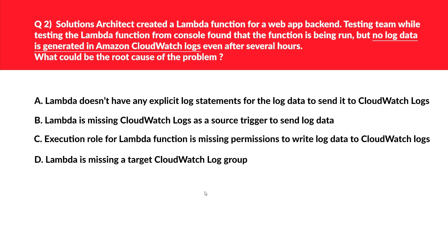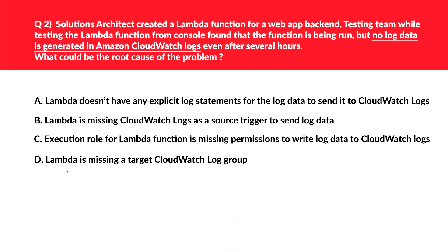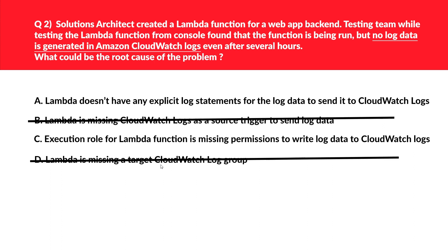We have an interesting question related to Lambda and CloudWatch Logs. Let's look at options B and D together. B says Lambda is missing CloudWatch Logs as a source trigger to send log data, while option D says Lambda is missing a target CloudWatch Log group. However, AWS Lambda is connected to CloudWatch by default and there is no way to disconnect or disable it. So these two options become invalid.